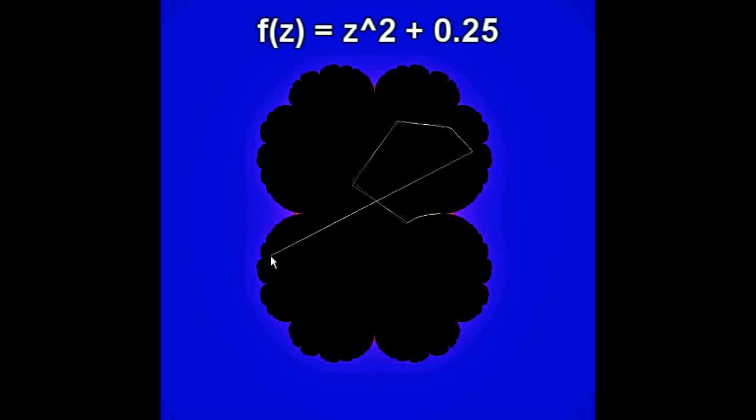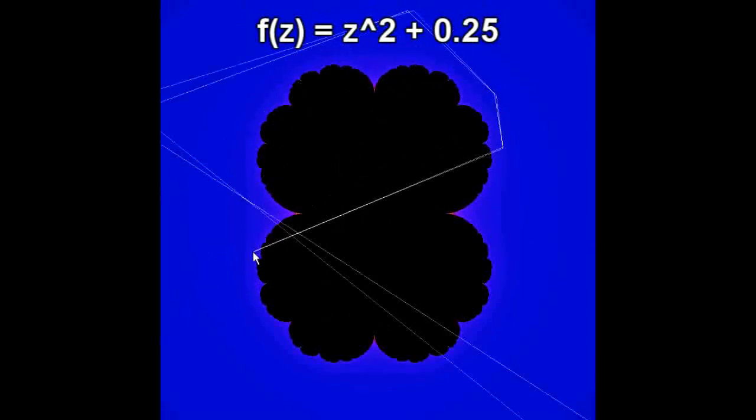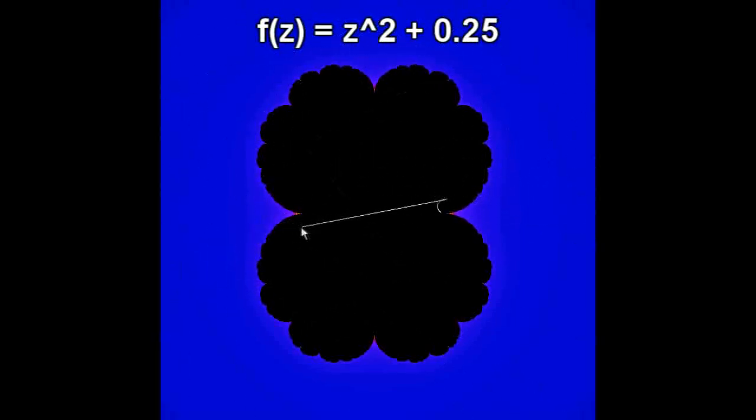So I plugged our function into this program. This is the origin here, and this is what we get from the rule f of z equals z squared plus 0.25. So you can see that we get much more interesting behavior going on. We have some little bumps going on here. These points stay. You can see how they move around. And these points here escape. That looks pretty cool.